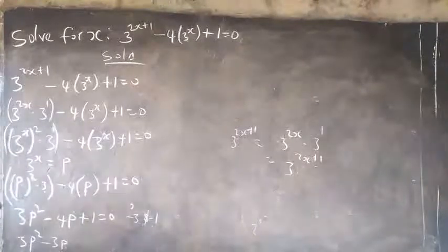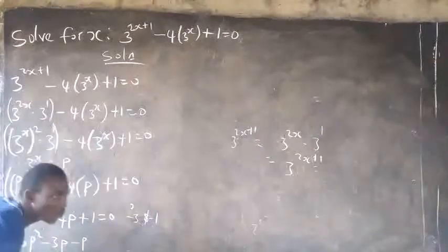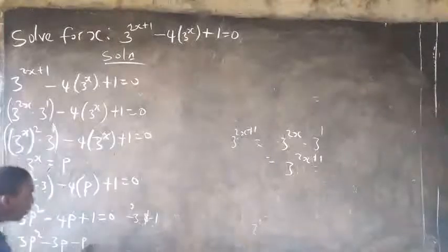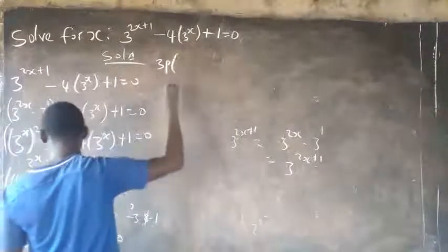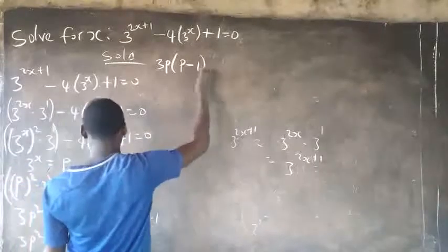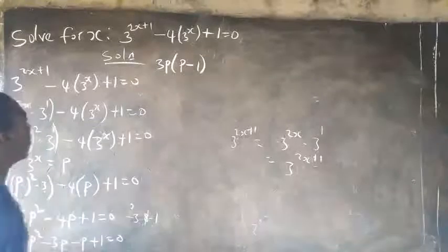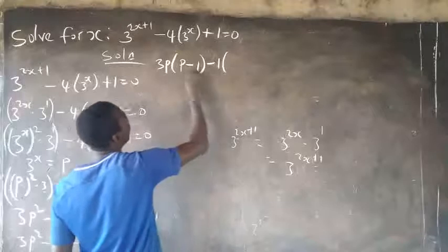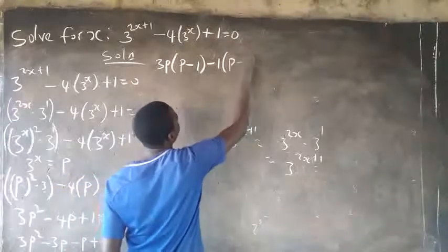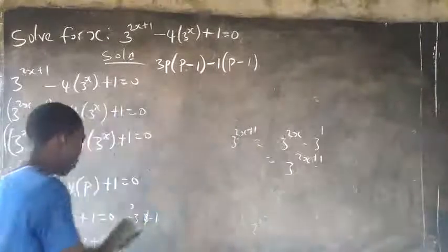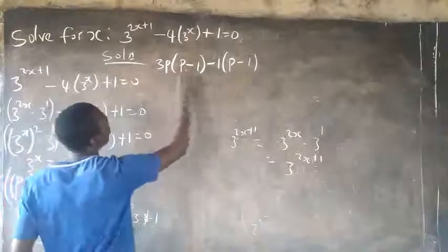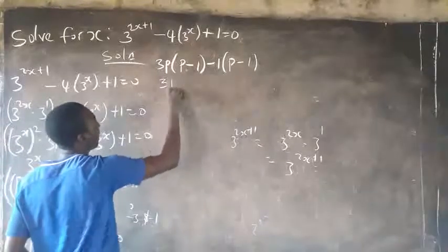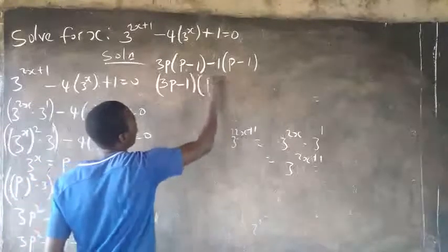So: 3p squared minus 3p minus p plus 1 equals 0. Grouping: 3p is common in the first two terms, leaving p minus 1. And minus 1 is common in the last two terms, also leaving p minus 1. So factorizing gives 3p minus 1 into p minus 1 equals 0.